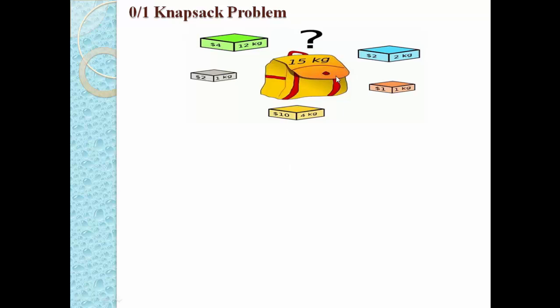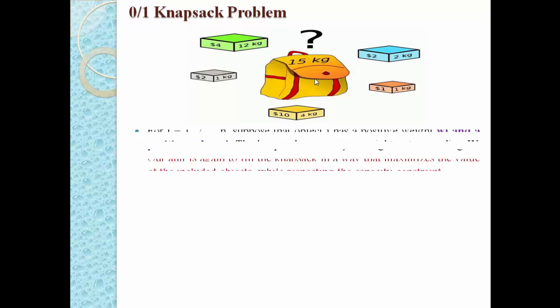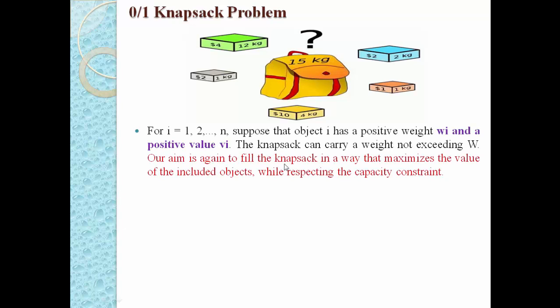Our knapsack has one capacity constraint. For example, suppose this knapsack has a capacity constraint of 15 kilograms, meaning our knapsack can carry a maximum of 15 kilograms. When we fill the knapsack using different objects, we must always check that the total weight does not exceed 15 kilograms. The total weight must be less than or equal to capital W, which in our case is 15 kilograms.